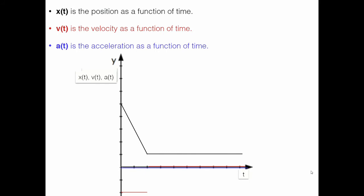What we notice from this example and the previous one is that whenever we have linear sections — or an entire linear position graph with no curves — the acceleration will be zero and the velocity will be constant during those regions.